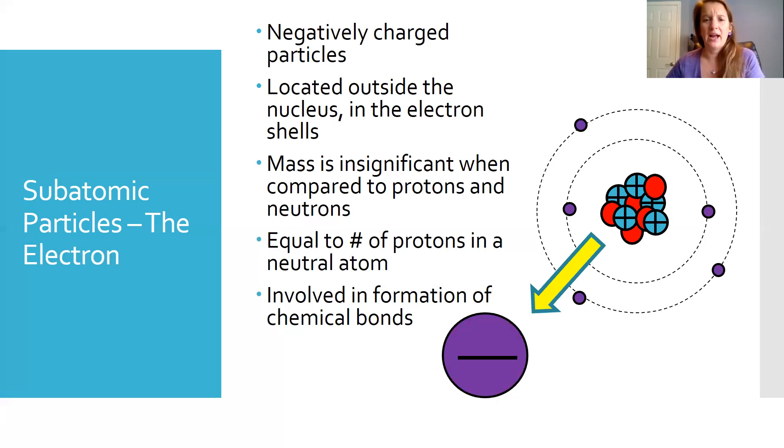Again, in a neutral atom, the number of electrons is going to be equivalent to the number of protons. In the electrons, these are going to be really, really important in the formation of chemical bonds. This is something, the electron is something that we dedicate a whole unit to. We talk about it a lot during our bonding units as well.